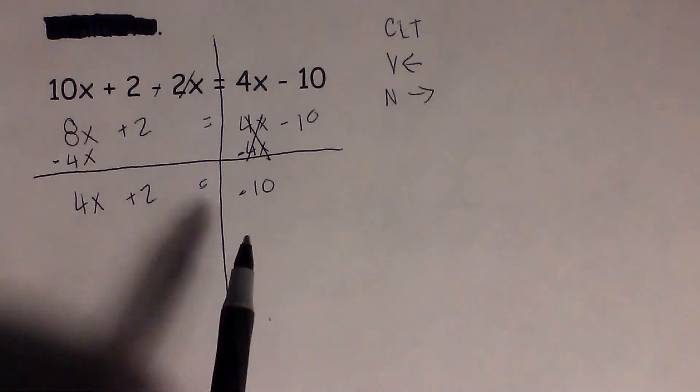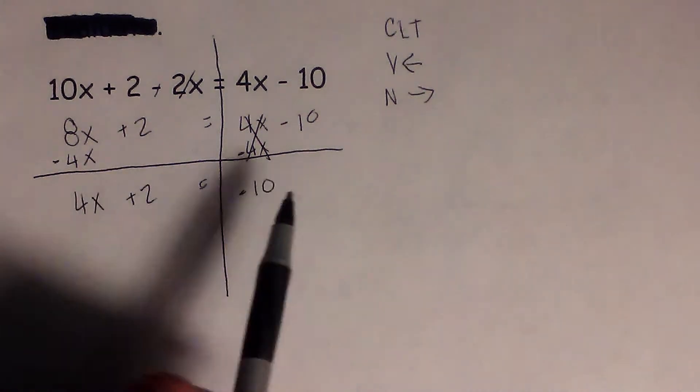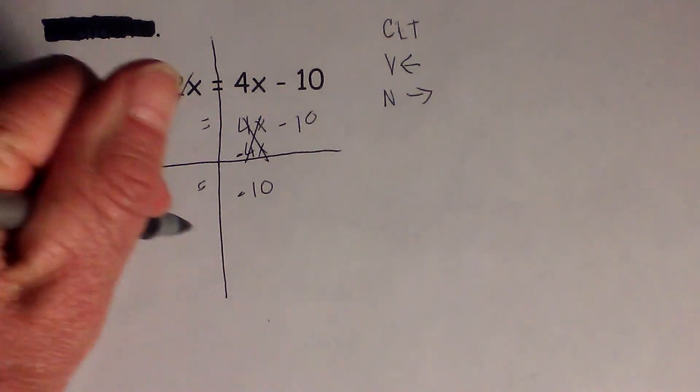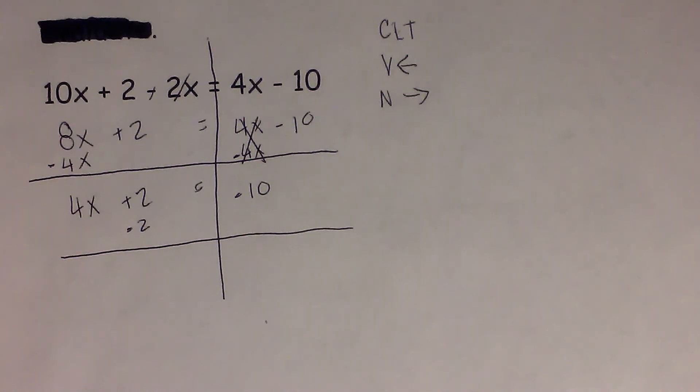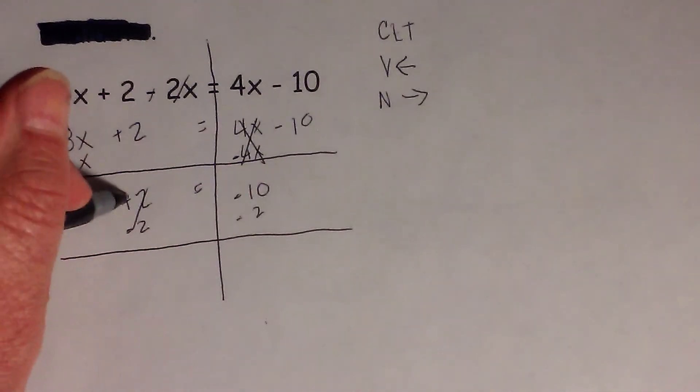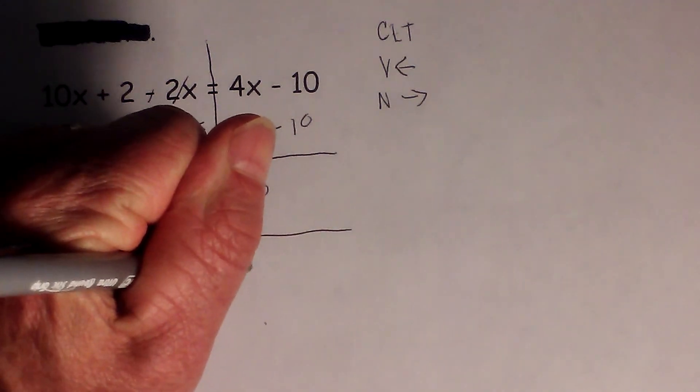Now we need to move all the numbers to the right. I need to get rid of this 2, so I will subtract 2. Notice how drawing the lines helps keep everything organized. What we do to the left, we do to the right. These cancel out, so we have 4x equals negative 12.